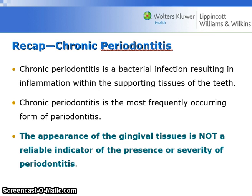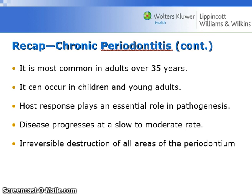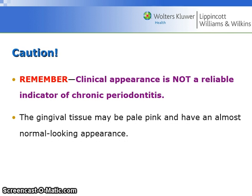Recap: Chronic periodontitis is a bacterial infection resulting in inflammation within the supporting tissues of the teeth. It is the most frequently occurring form of periodontitis. The appearance of gingival tissues is not a reliable indicator of the presence or severity of periodontitis. It is most common in adults over 35, can occur in children and young adults, and the host response plays an essential role in its pathogenesis. Disease progresses at a slow to moderate rate with irreversible destruction of all areas of the affected periodontium. Clinical appearance is not a reliable indicator — do not make a diagnosis by clinical appearance alone.